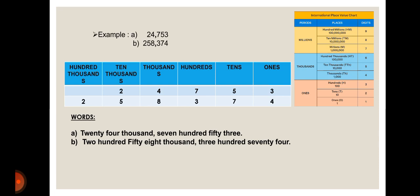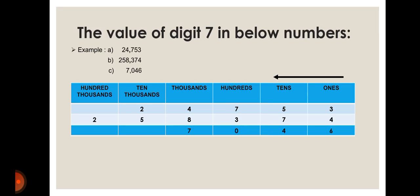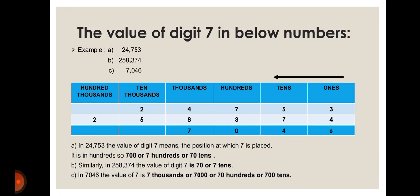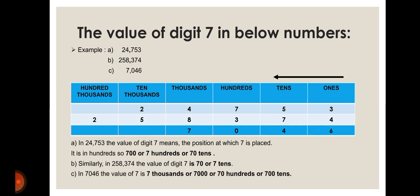When writing the place value of a particular digit, we start from right to left. In 24,753, the digit seven comes in the hundreds place, so the value of digit seven is seven hundred. It can also be written as seventy tens, because tens means ten, and seventy times ten equals seven hundred — another valid way of expressing the same value.